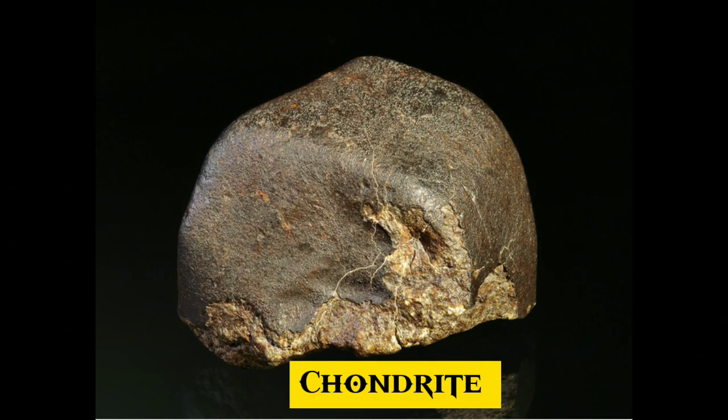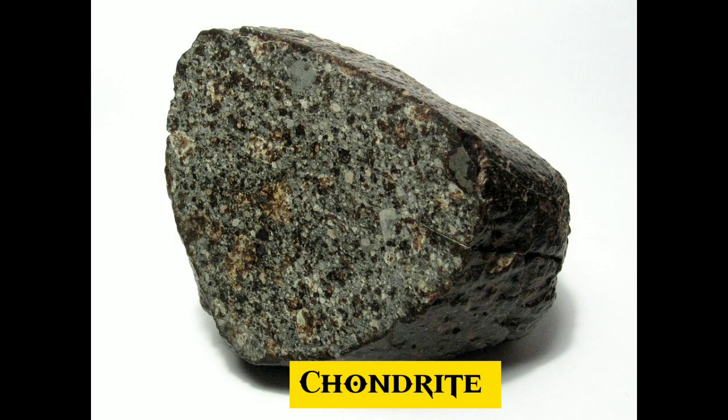5. A chondrite is a stony, non-metallic meteorite that has not been modified by either melting or differentiation of the parent body. Chondrites are formed when various types of dust and small grains in the early solar system accreted to form primitive asteroids.